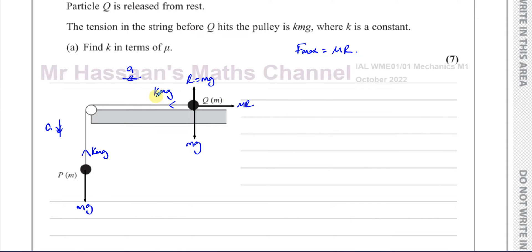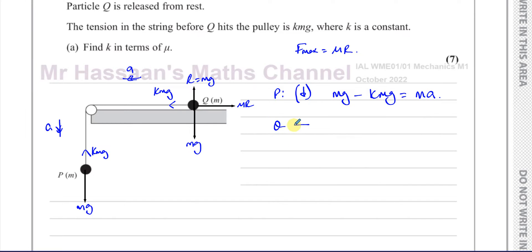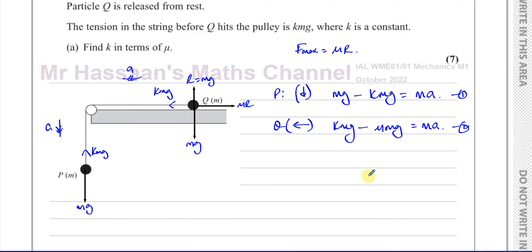Now we have all forces on P and Q. Considering P and taking downwards as positive — since P moves downwards — we get: MG minus KMG equals MA. Considering Q and taking the direction towards the pulley as positive: KMG minus mu times MG equals MA. So we now have two equations, and we want to find K in terms of mu.